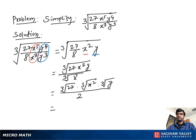Cube root of 27 is 3, because 3 times 3 times 3 is 27. So the result is 3 times cube root of x²y over 2, which is our final answer.